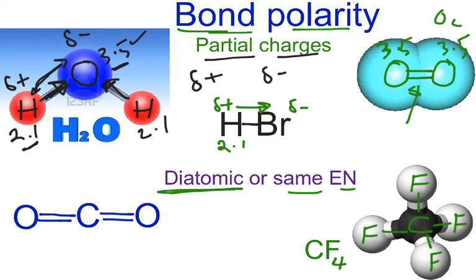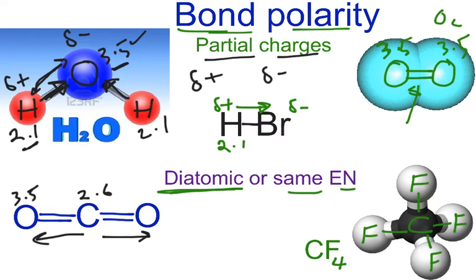Looking at CO2, carbon dioxide: carbon has an electronegativity around 2.6 and oxygen is 3.5. So we expect the pull to go in this direction and in this direction — these oxygens will carry a partially negative charge on the outside. So this bond is a polar bond, and likewise the other C=O bond is also a polar bond. This is bond polarity.